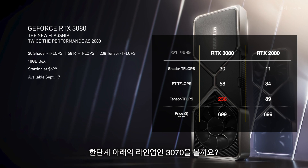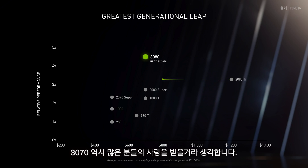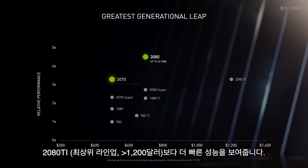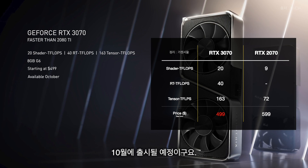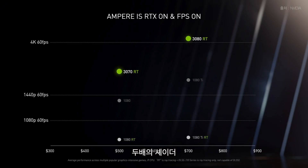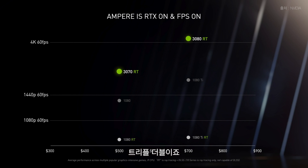Available September 17th. You're going to love the new RTX 3070 — faster than the 2080 Ti, starting at $499, available in October. Twice the shader, twice the ray tracing, and twice the Tensor Core. The triple-double.